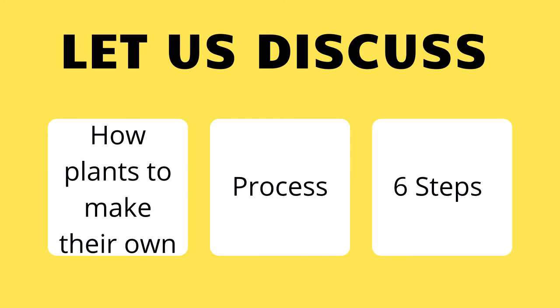Let us discuss how plants make their own food. In this process, it contains six steps.